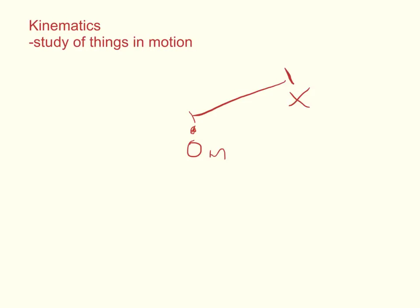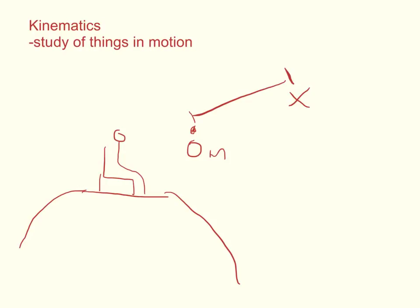It gets a little tricky when our frame of reference can move. For example, you can ask yourself: are you sitting still right now? Well, the answer is it depends on your frame of reference. If we're talking about you sitting still just in your chair — yeah, you're sitting still if your frame of reference is the ground. But take that frame of reference and make it the whole earth. Now are you sitting still? Not really, because the earth is rotating, so you do have some speed. You can see how changing your frame of reference can change your answer to these problems.